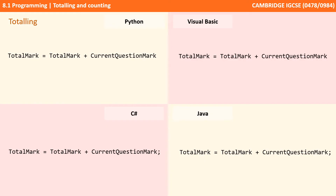Totalling in various languages — here we're looking at Python, Visual Basic, C-sharp, and Java, which are almost identical. The only difference you can see here is that C-sharp and Java require a semicolon on the end.